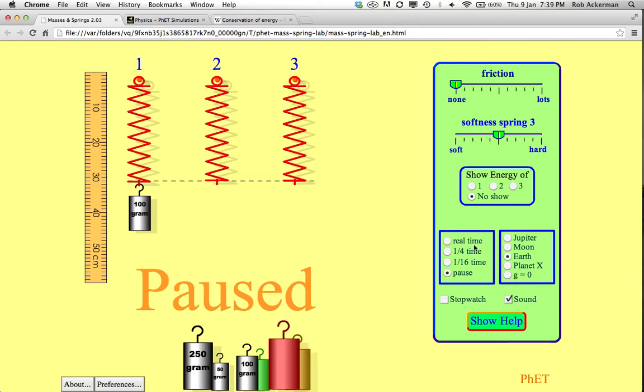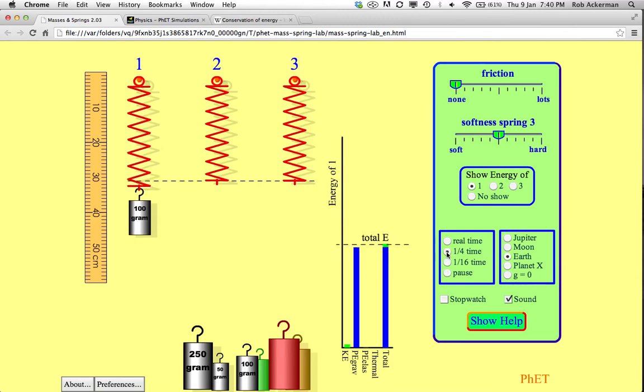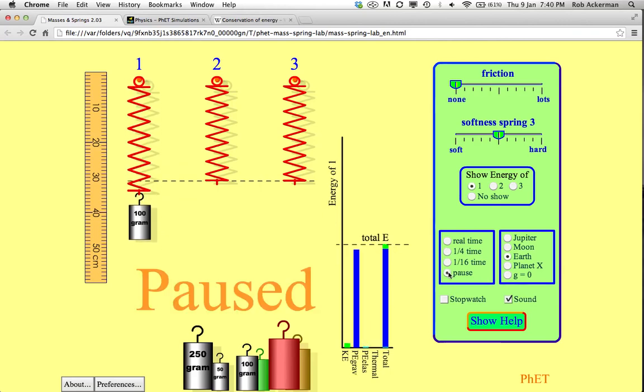If you want to see a similar graph to what we had in the previous skatepark question, do this. Click on energy, show energy, and then run the simulation. Watch what happens. Kinetic energy changes as the speed changes. Gravitational energy becomes very low at the bottom, and then goes back up at the top. Elastic energy increases as the spring stretches, but the total energy stays constant.